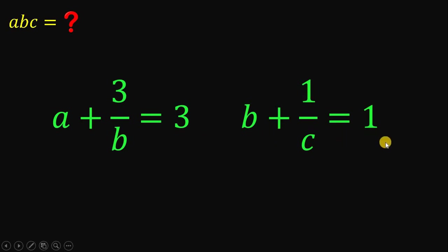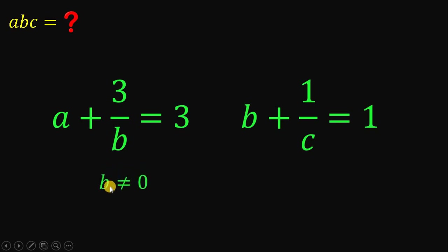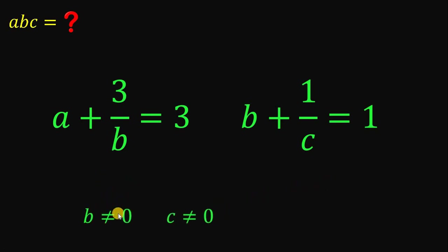How are we going to answer this kind of question? First thing to notice is that b cannot be equal to 0, because if b equals 0, then 3 over b is undefined. So on the first equation, b is not equal to 0. Also, on the second equation, c is not equal to 0. Let's set aside these conditions for now.